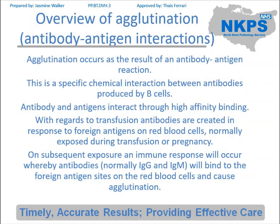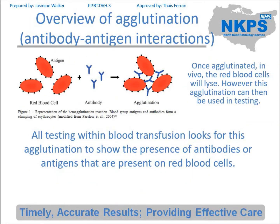These will then bind to those red blood cells causing agglutination, as you can see here. The agglutination is what we look for in all of our testing and it's how we can tell whether or not there is an antibody or antigen present. So if we were looking to find out whether a patient had a red cell antigen present, we would use an anti-serum containing a known antibody and look for any agglutination.